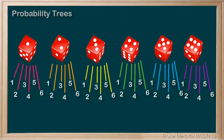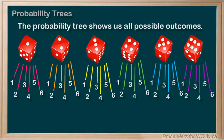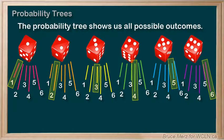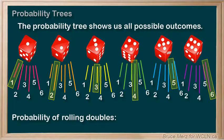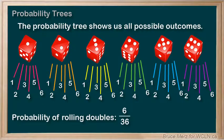Well, the beauty of a probability tree is that it shows us all of the branches or all of the different possibilities. And when we look at the branches, we can see six outcomes or branches that have doubles. And so the probability of getting doubles is six out of the 36, or when we reduce that, we get one out of six, or approximately 17%.